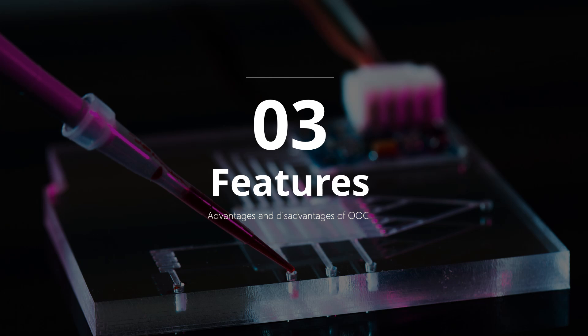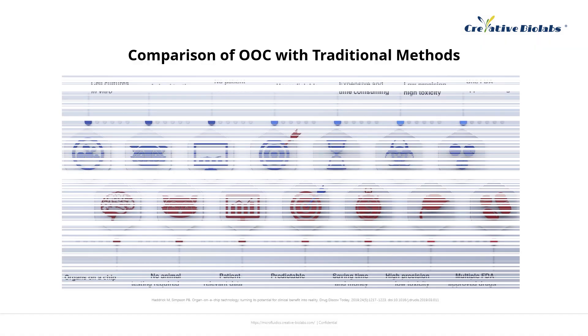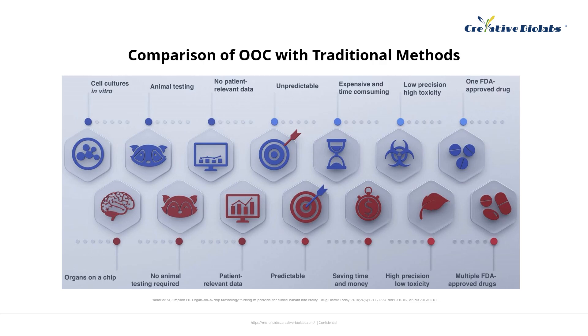The third part elaborates on the characteristics of OOC, along with its advantages and disadvantages. Firstly, it entails a comparison between OOC and traditional methods, encompassing the following seven aspects.